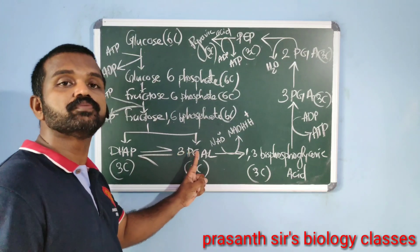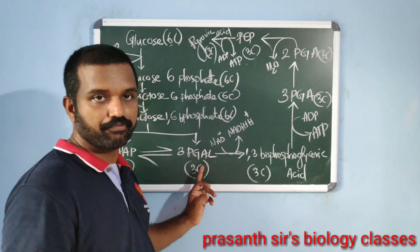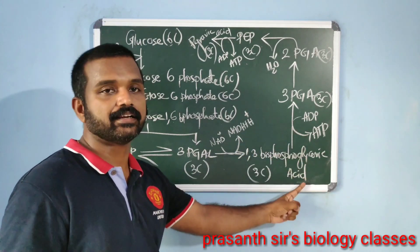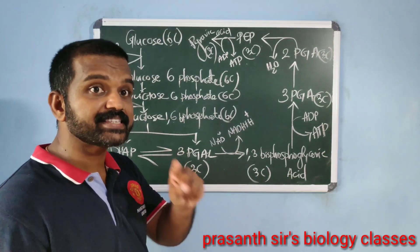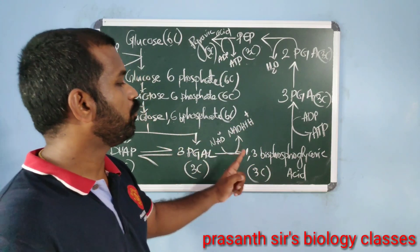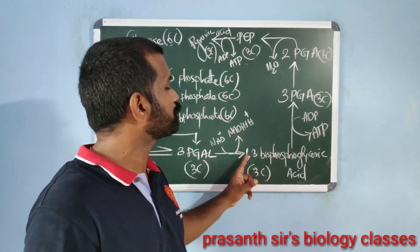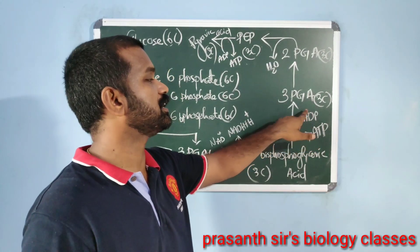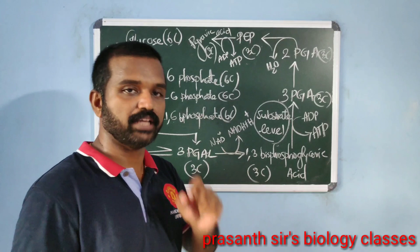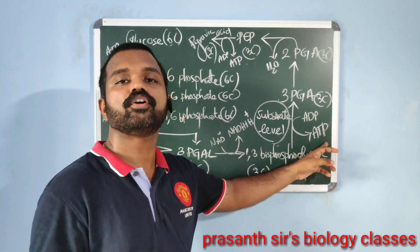3-phosphoglyceraldehyde (3-PGA) is converted into 1,3-bisphosphoglyceric acid — that is, an aldehyde is converted into an acid. Oxidation occurs during this step; the removed hydrogen is accepted by NAD⁺, which becomes NADH + H⁺. In the next step, 1,3-bisphosphoglyceric acid becomes 3-phosphoglyceric acid — the phosphate group is removed from the first carbon atom and accepted by ADP, resulting in ATP synthesis. This mechanism is known as substrate-level phosphorylation, where energy released during conversion of a substrate into product is directly used for ATP synthesis.